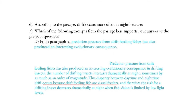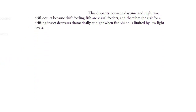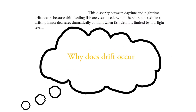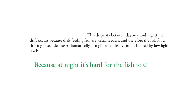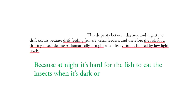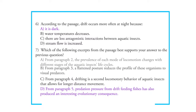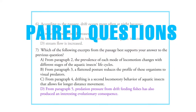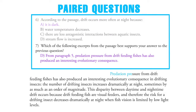So clearly the answer to number 7 is choice D. Now, to answer number 6, try saying in your own words why drift occurs more often at night. You might say: because at night it's hard for the fish to eat the insects when it's dark, or when the fish can't see. Now all we have to do is select the answer that matches this idea — clearly it's choice A: it is dark. So in this case, this pair of questions was easier to answer by looking at the evidence first, or by answering number 7 first, then using that place in the passage to find the answer to question 6.